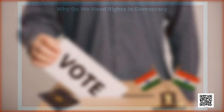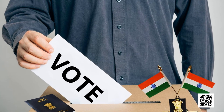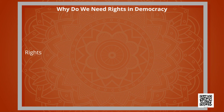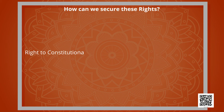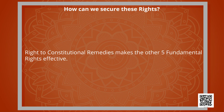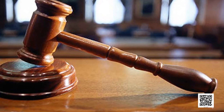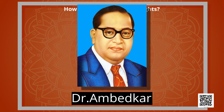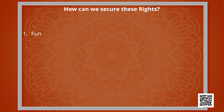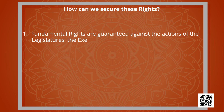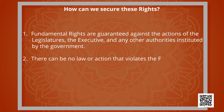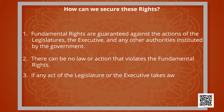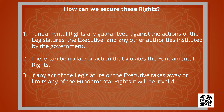Why do we need rights in a democracy? In a democracy, every citizen has the right to vote and the right to be elected to the government. Rights protect minorities from the oppression of the majority and are guarantees which can be used when things go wrong. The Right to Constitutional Remedies makes the other five fundamental rights effective. When any of the rights are violated, we can seek remedy through courts. That is why Dr. Ambedkar called the right to constitutional remedies the heart and soul of our constitution. Fundamental rights are guaranteed against the actions of the legislature, executive, and any other government authority — any law or action that violates fundamental rights will be invalid.